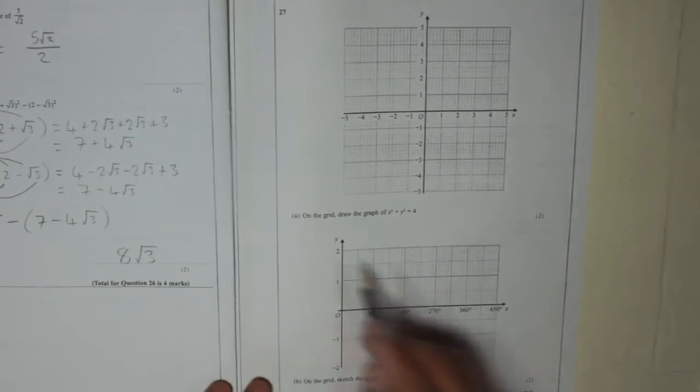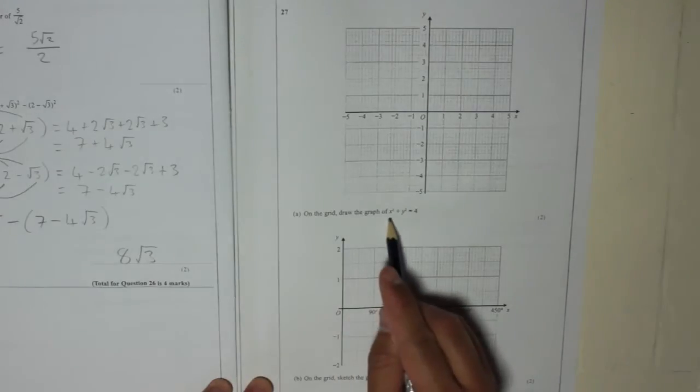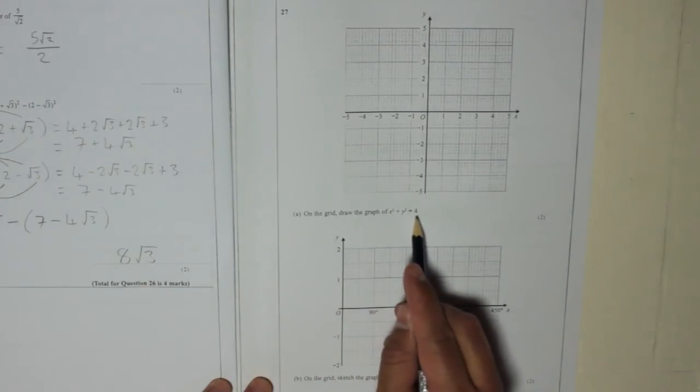Question 27. A. On the grid, draw the graph of x squared plus y squared equals 4.